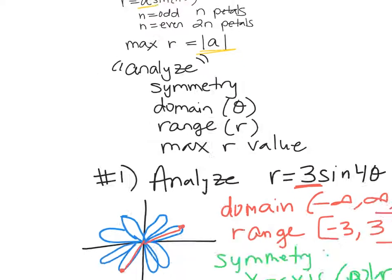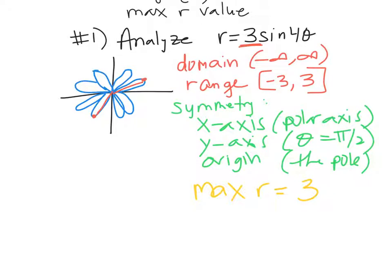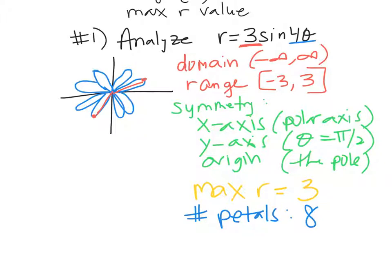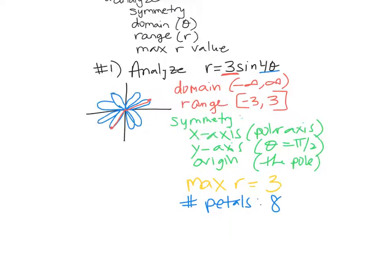They might also ask how many petals. You can tell by looking at the equation — N is 4, which is even, so there are going to be 8 petals. Or you can just count them on your graph. The 3 in front is always going to be your range and your max R. Rose curves are not hard — they're pretty straightforward.